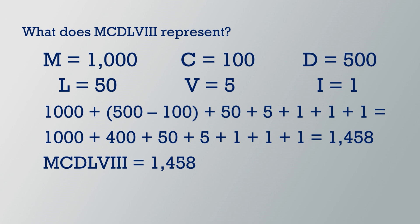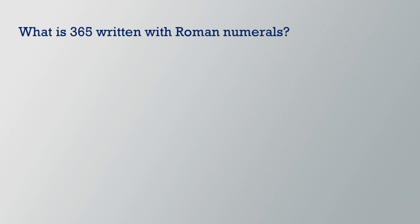Let's try one final example where we will look at writing numbers as Roman numerals. What is 365 written with Roman numerals? Let's look at the 3 in the hundreds place value. This means 300 and C equals 100, so we will need three hundreds which is written as CCC.